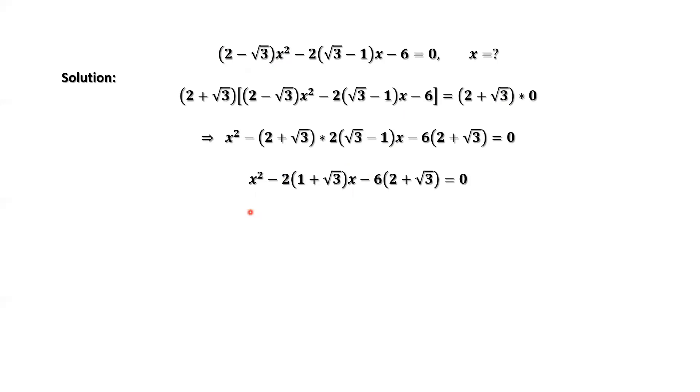The discriminant of this quadratic equation is Δ. Δ = b² - 4ac. b = -2(1 + √3), a = 1, c = -6(2 + √3).